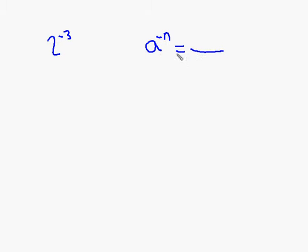The rule is that you can write it as a to the n, and when you do that, you put it in the denominator, and in the numerator you have the number 1. So with this example, I'm using a being 2 and n being 3.